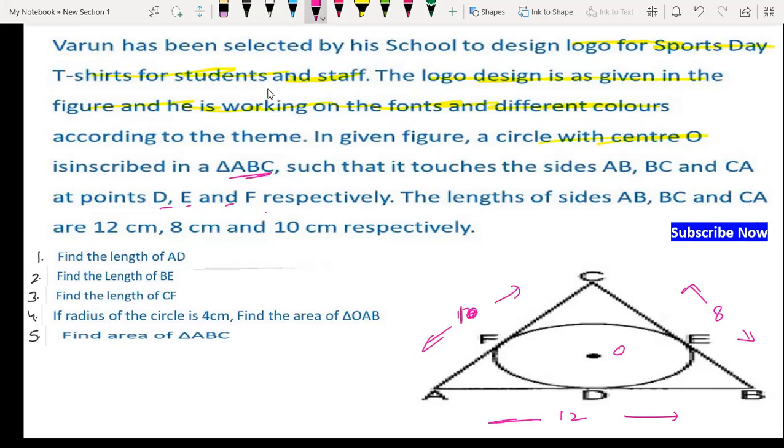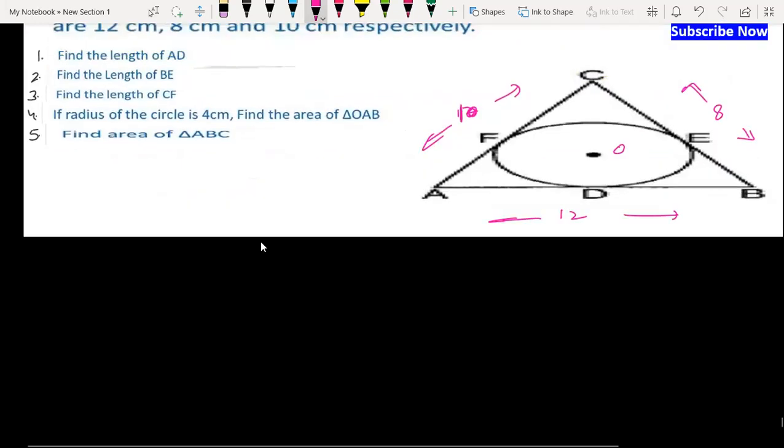Now we can see the figure. The first question is find the length of AD. All the questions we are going to solve. First of all, let's take CF as x. If CF is x, then CE will be x.